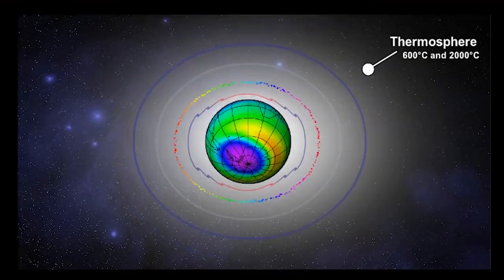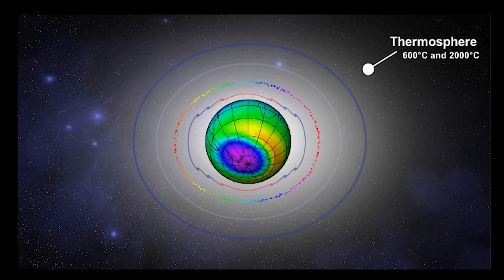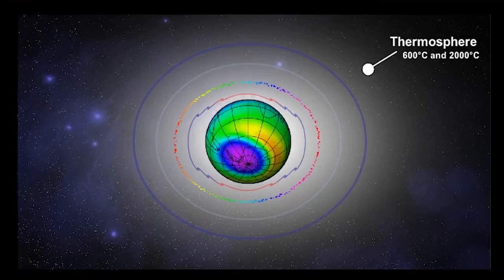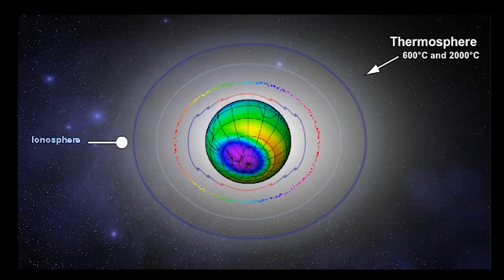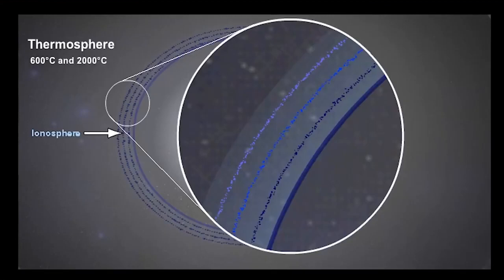Above the mesopause is a layer called the thermosphere. This zone is characterized by a rapid rise in temperature up to about 200 kilometers. Temperatures here can be between 600 and 2,000 degrees Celsius. The lower part contains a zone called the ionosphere, where we can have such high ionization levels that long-wave radio waves can be reflected back to Earth. Where this reflection is at a maximum is at roughly 110, 160, and 250 kilometer levels. These are respectively called the Kennelly, Heaviside, and Appleton layers.